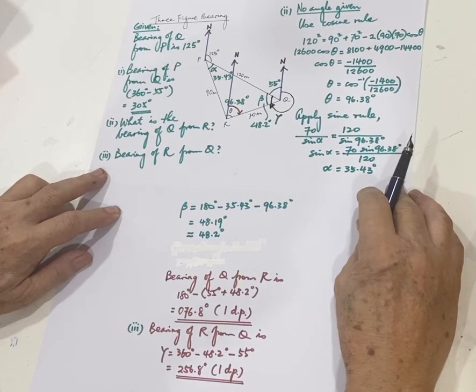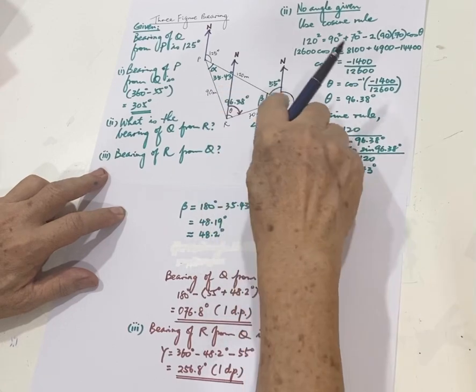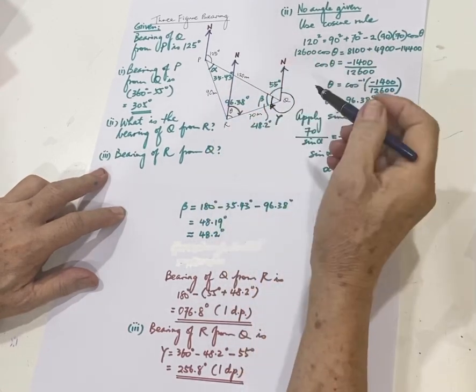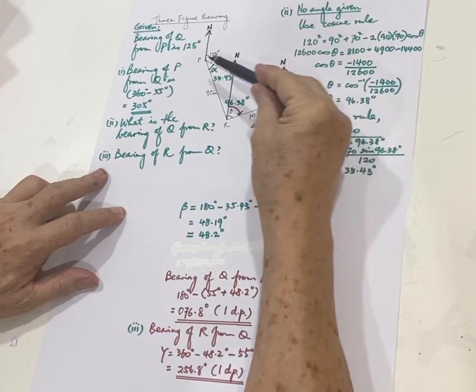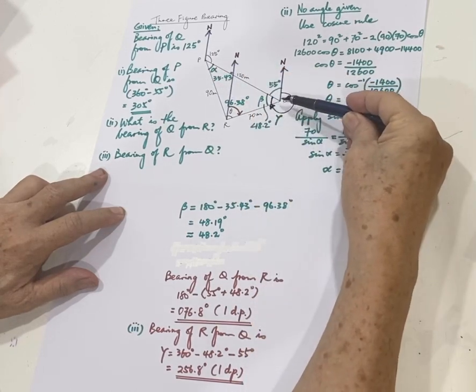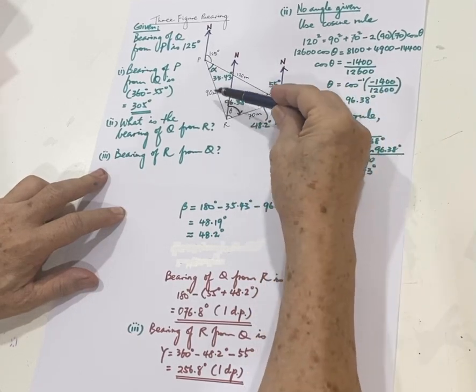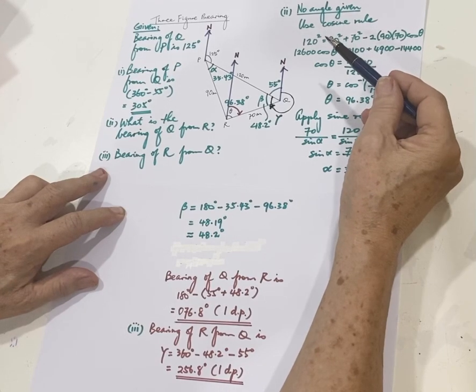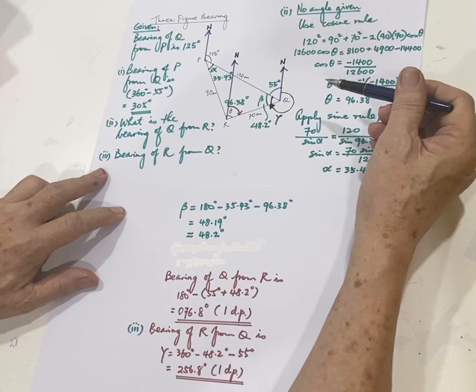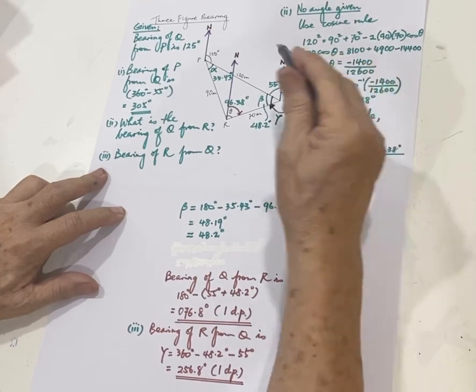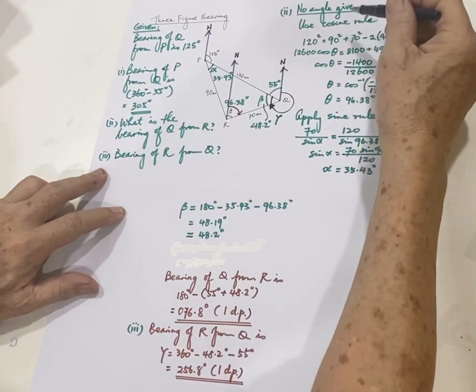But next becomes difficult. What is the bearing of Q from R? So let's say we were given a triangle of these three towns, 120 meters is between P and Q, Q and R is 70 meters, and P and R is 90 meters. All right, it's very important, once that is given, the relative locations of PQR are already fixed. So let's look at number two here, I would like to share with everybody.